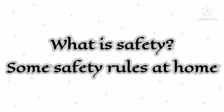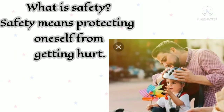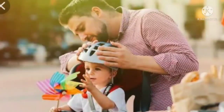Now let us learn about what is safety and some safety rules to follow at home. What is safety? Safety means protecting oneself from getting hurt. What is an accident? An accident is an unpleasant event that happens suddenly and causes injury.